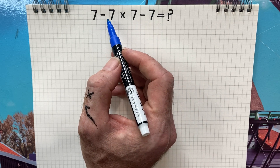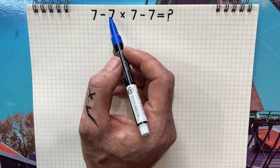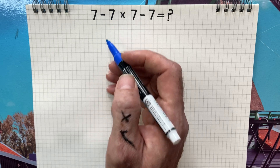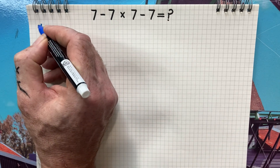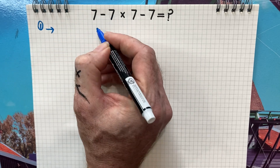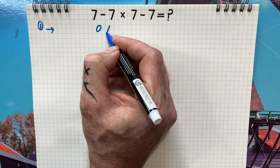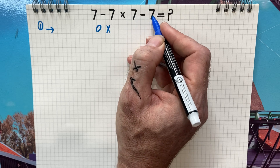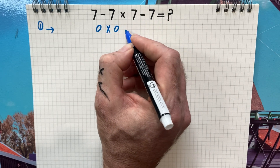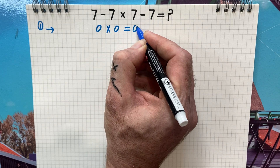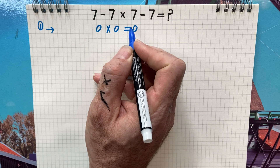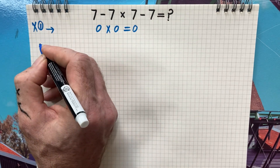First I'm going to show you the most common mistakes people usually make. The first one: seven minus seven is zero, times seven minus seven is zero, and zero times zero is zero. But this is the wrong answer.